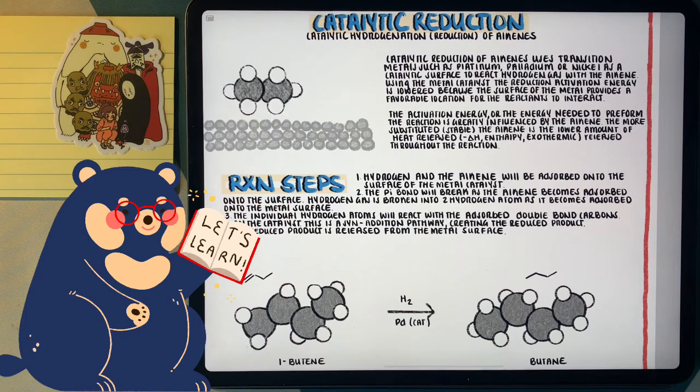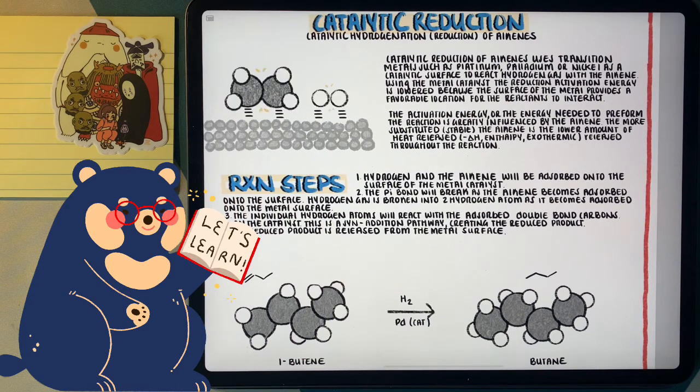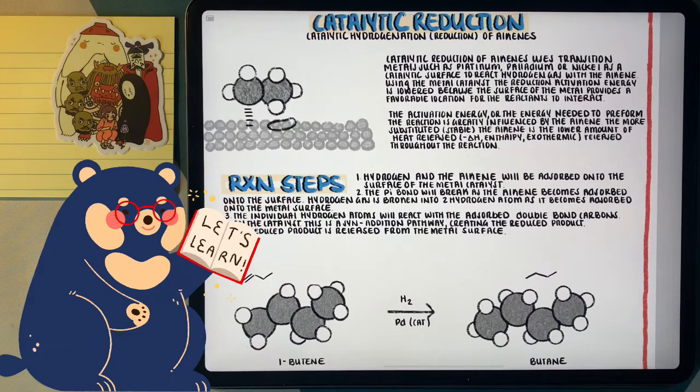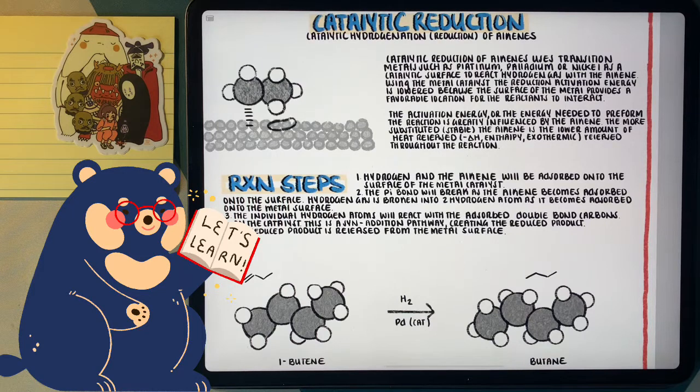So following the steps of the animation that mocks the steps of this reaction, hydrogen and the alkene will be adsorbed onto the surface of the metal catalyst. The pi bond in the alkene will break as the alkene becomes adsorbed onto the surface. Hydrogen gas will be broken into two hydrogen atoms as it becomes adsorbed onto the metal surface.